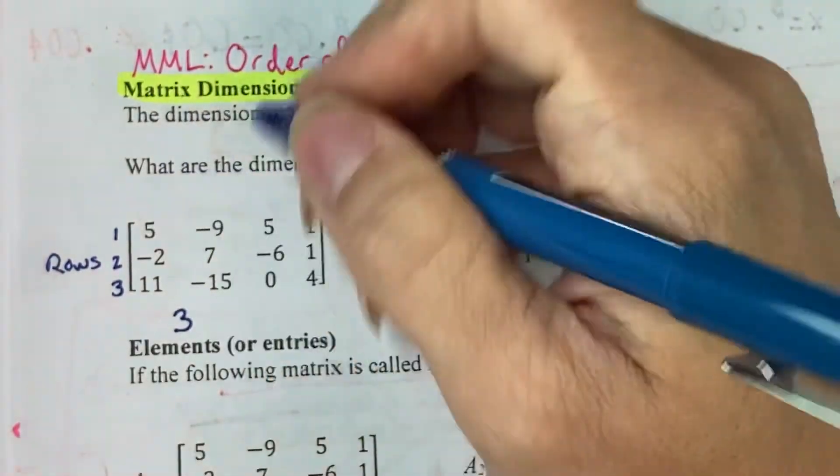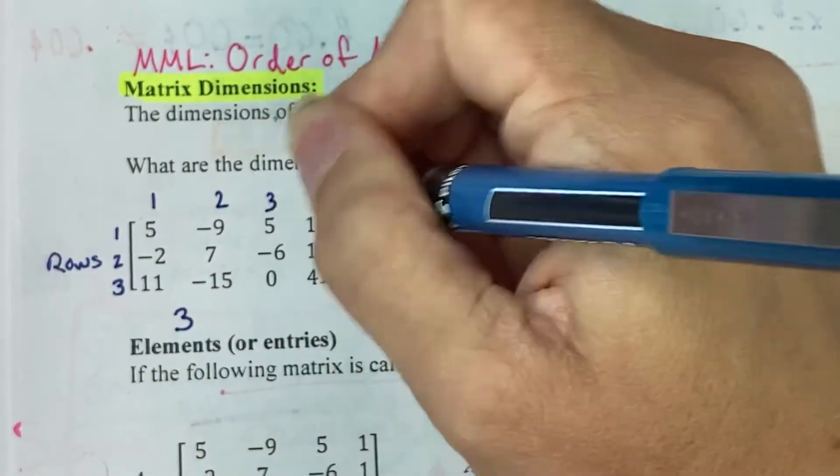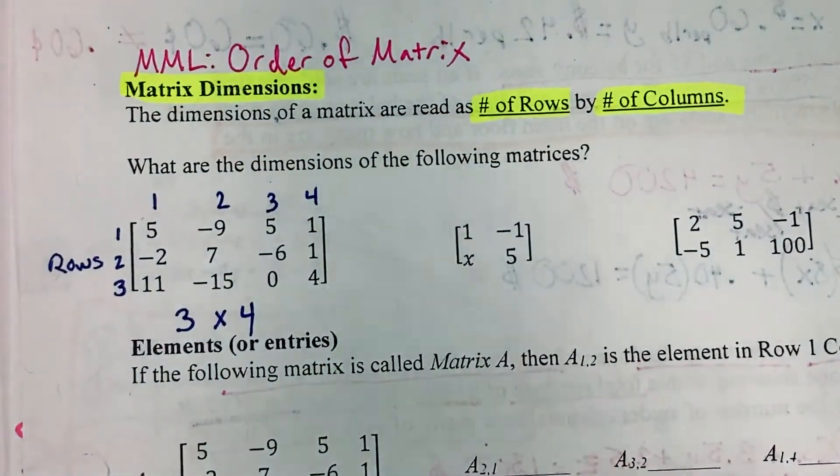And then we count the number of columns, which go up and down. 1, 2, 3, 4. So this would be a 3 by 4 matrix.